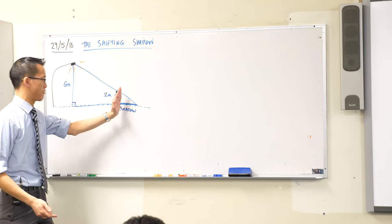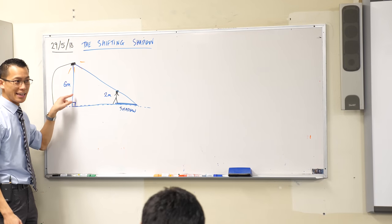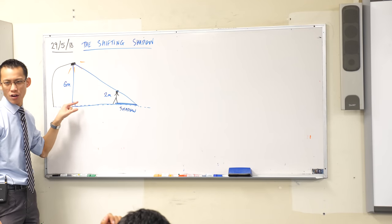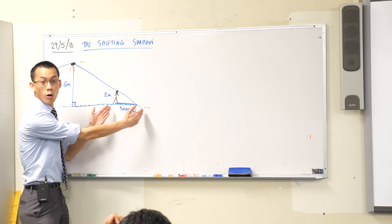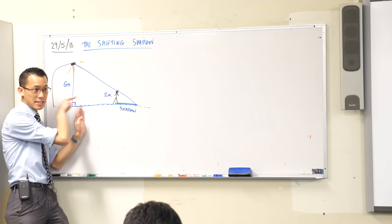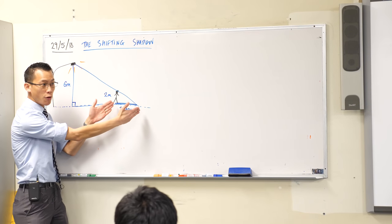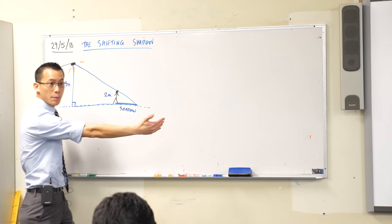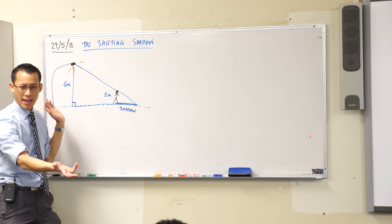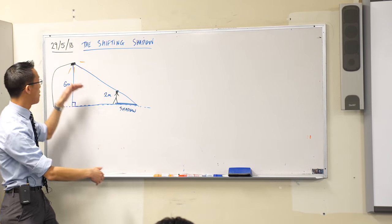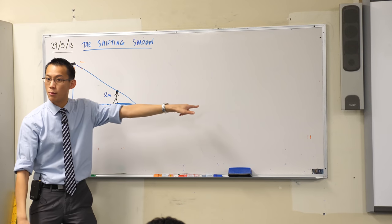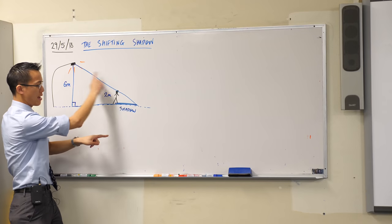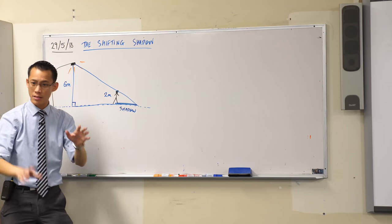Because you can imagine if we rewind the clock, right? And have LeBron standing right underneath the lamp. Then he doesn't have a shadow, really. It's right beneath him. It's not long like this. But the second he starts moving, the shadow begins to form. And the further he is away, the longer the shadow will be. This is just like at sunset. Your shadow is really long at sunset because you have a really long triangle being formed between you and the sun and where your shadow ends. Does that make sense?